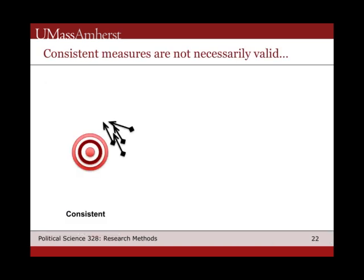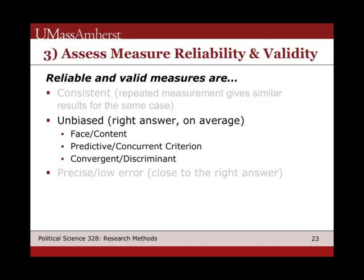The thing about consistent measures is we could be getting the same score over and over again but completely missing the bullseye — every measurement is biased in some way. This has been part of the claim about many standardized tests: they might be consistent, but they aren't necessarily measuring what we want, or they're systematically biased away from the thing we think we should be measuring. So they can be consistent but not necessarily valid. That brings us to the next issue: we need measures to be unbiased, meaning on average we get the right answer. The types of validity we consider are face and content validity, predictive or concurrent validity, and convergent and discriminant validity.